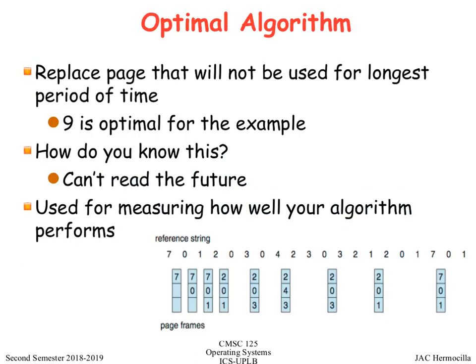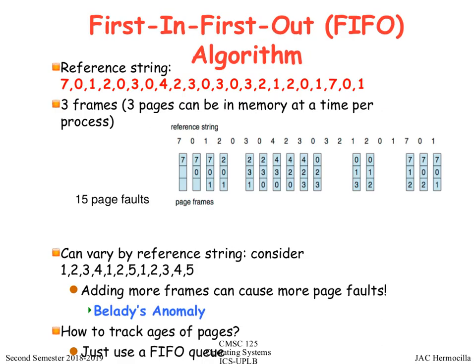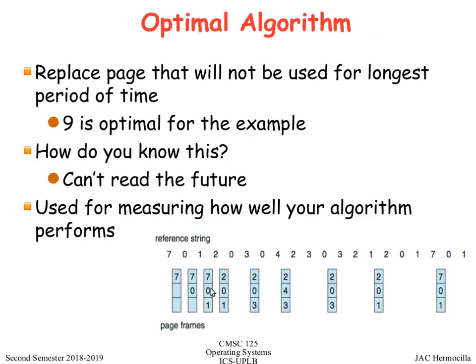The last algorithm for today is the Optimal Algorithm. The idea is to replace the page that will not be used for the longest period of time in the future — whichever page in the page table will not be accessed again soonest is removed. That is the most ideal choice. However, it is difficult to implement because you can't predict the future, so approximations are needed. Using the same reference string and 3 frames, the optimal algorithm produces only 9 page faults, compared to 15 for FIFO.